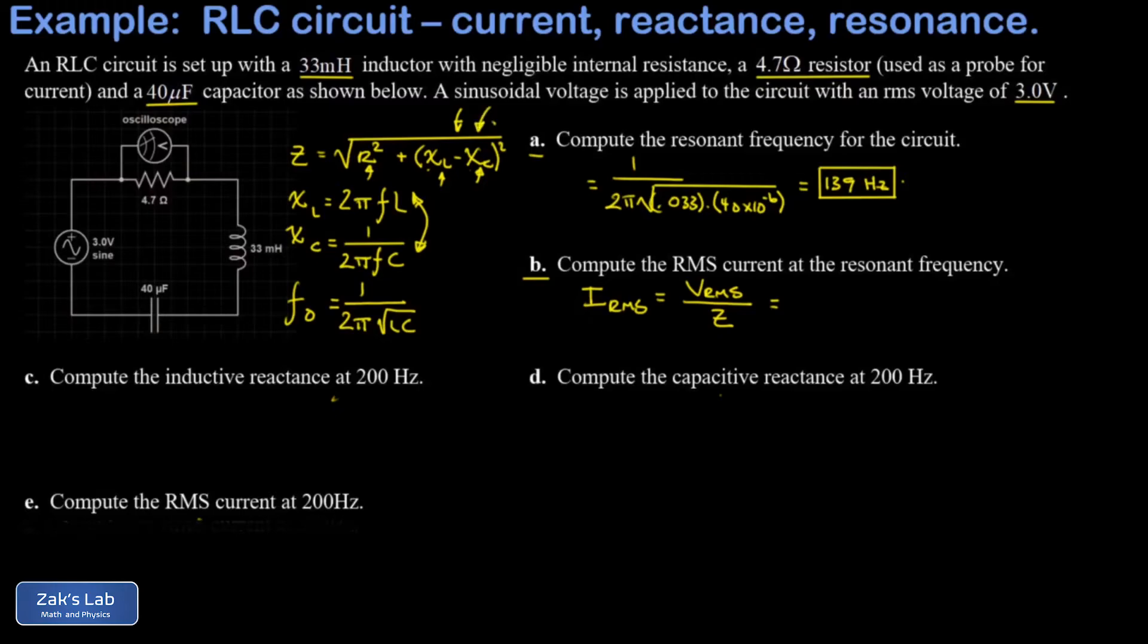And that term in the impedance vanishes. So as long as we're at the resonant frequency, the total impedance is equal to the square root of R squared, which is just the resistance in the circuit. So I have my 3.0 volts RMS divided by my impedance, which turns out to just be equal to the resistance, which was 4.7 Ohms.